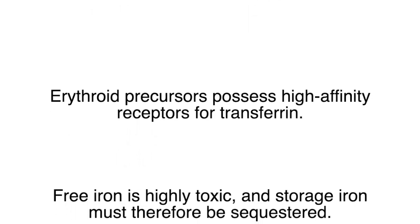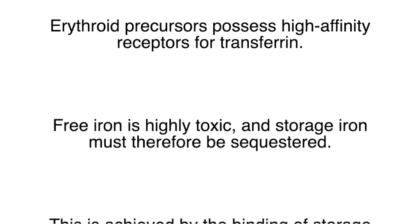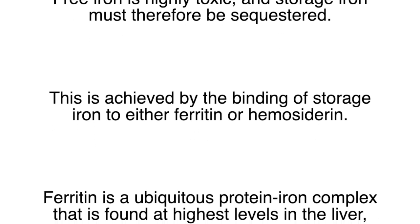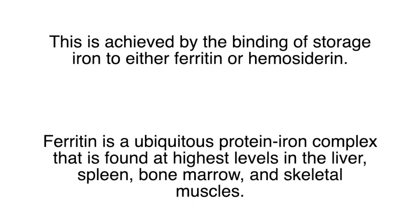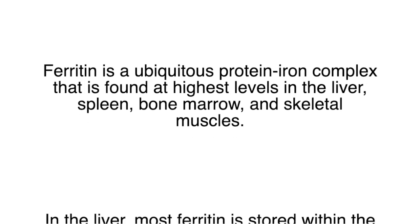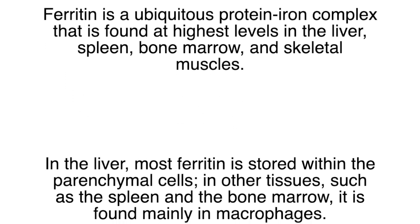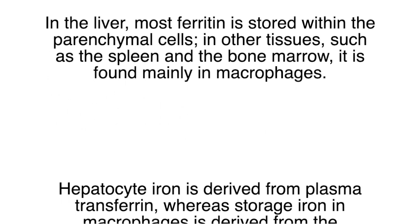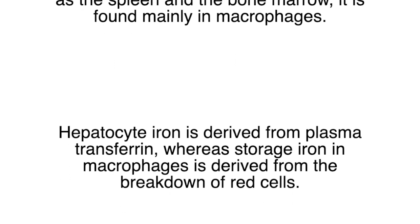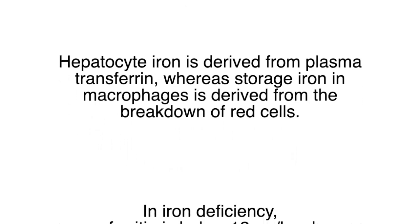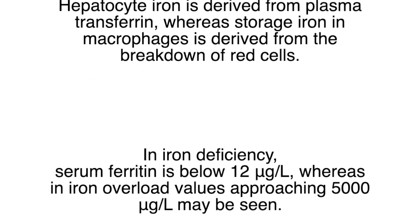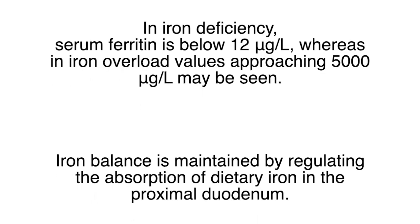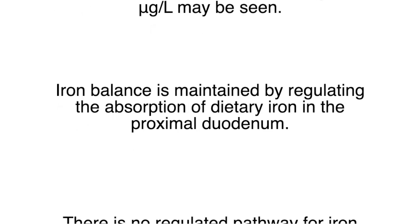Free iron is highly toxic and storage iron must therefore be sequestered, achieved by binding storage iron to either ferritin or hemosiderin. Ferritin is a ubiquitous protein-iron complex found at highest levels in the liver, spleen, bone marrow, and skeletal muscles. In the liver, most ferritin is stored within the parenchymal cells; in other tissues such as the spleen and bone marrow, it is found mainly in macrophages. Hepatocyte iron is derived from plasma transferrin, whereas storage iron in macrophages is derived from the breakdown of red blood cells. In iron deficiency, serum ferritin is below 12 micrograms per liter, whereas in iron overload, values approaching 5,000 micrograms per liter may be seen.